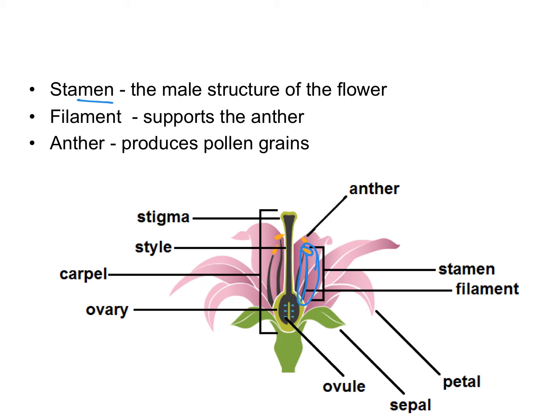Since we're talking about gametes, remember back to meiosis when we learned about human gametes. Gametes are haploid — they contain half the number of chromosomes that a normal body cell has, so that upon fertilization, when the sperm cell meets the egg cell, we get the full number in the growing zygote. The same is true of flowers: they have a male and female gamete that become fertilized when they meet and produce a zygote.